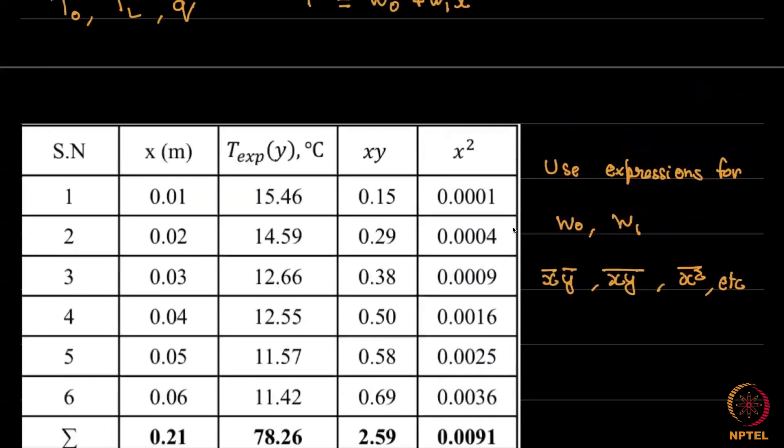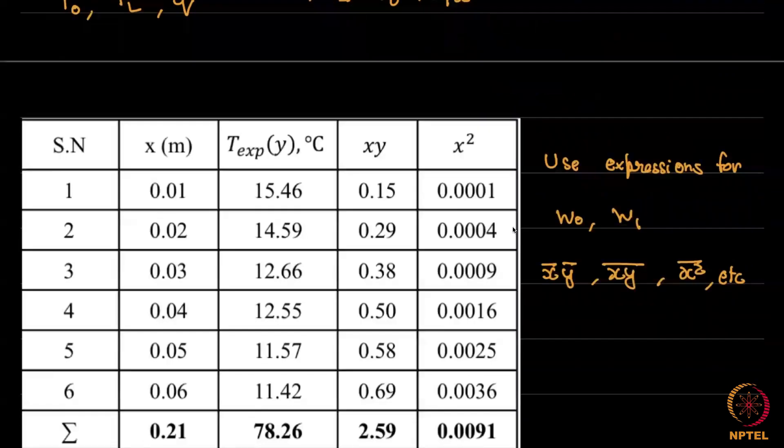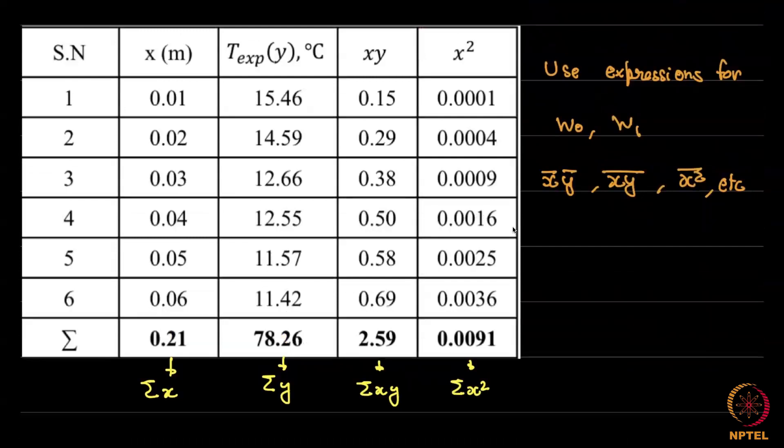Now using these expressions, I will not actually put these in here. You can calculate what w0 and w1 are. If you calculate these quantities, w0 comes to 15.9787 and w1 you can calculate this to minus 83.9143. You can use an excel sheet as I have shown here, or you can use a MATLAB program which I will show you in the next week. But we will use this technique as well as a couple of other techniques.